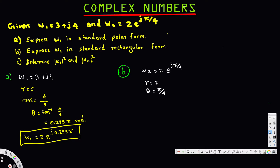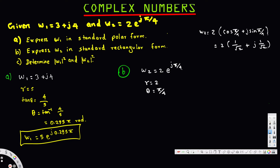Whenever we have this exponential format, we can use Euler's identity to expand it. Euler's identity says we can write this as w2 equal to r times cosine of the angle plus j sine of the angle. With r equal to 2, this becomes 2 times cosine of 5 over 4 plus j sine of 5 over 4. Now cosine of 5π/4 is negative 1 over root 2 and sine of 5π/4 is also negative 1 over root 2.